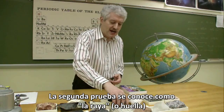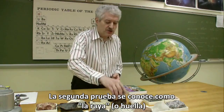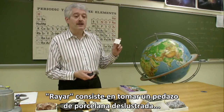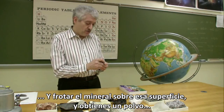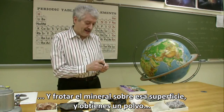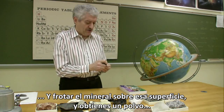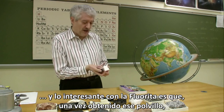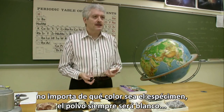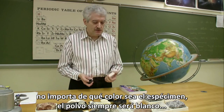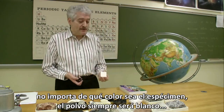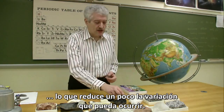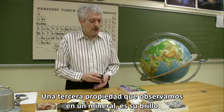The second test is called streak. In streak, you take a piece of unglazed porcelain and you rub the mineral against that and you get a little powder. The interesting thing with fluorite is that once you've gotten that powder, no matter what color the specimen is, your powder is going to be white, which reduces some of the variation that can occur.